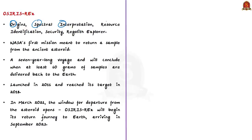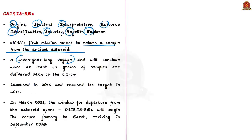This mission is essentially a seven-year-long voyage, set to conclude when at least 60 grams of sample are delivered back to Earth. In the last week, OSIRIS-REx collected the required amount of Bennu sample. The mission was launched in September 2016 from Florida and reached its target in 2018.